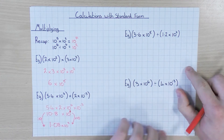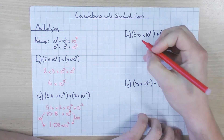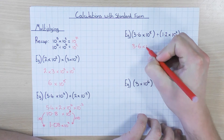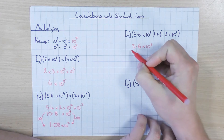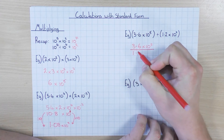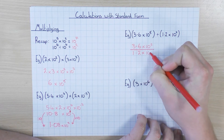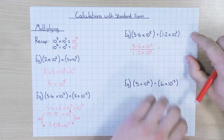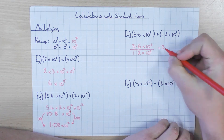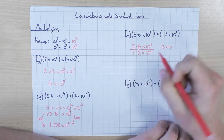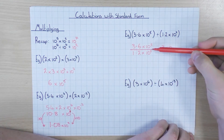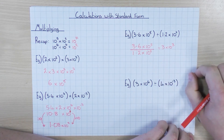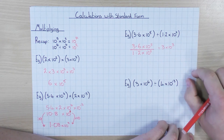Now let's look at dividing. I'm going to write it as a fraction to make it easier to see and solve. I'll block off the coefficients: 3.6 divided by 1.2 is 3. Then for the powers, since we're dividing we subtract them: 5 take away 2 is 3. So the answer is 3 × 10³. Check it's in standard form — yes, 3 is between 1 and 10, happy days.